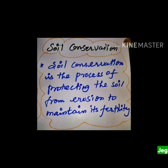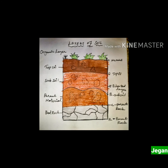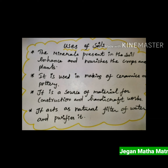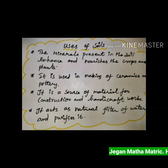Layers of the soil: the layers of soil are topsoil, subsoil, parent material and bedrock. Uses of soil: soil is one of the most important natural resources. It is a basic requirement for plant growth and supports various life forms on the earth.